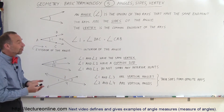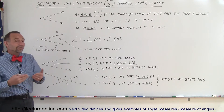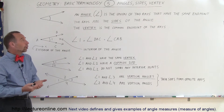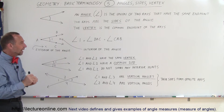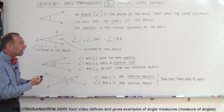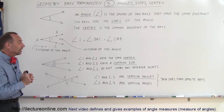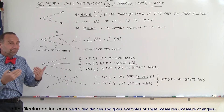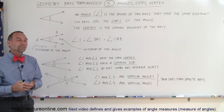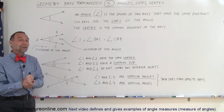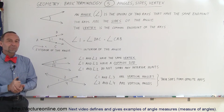So now we have a good definition for angle, a good definition for the sides of the angle, a good definition for the vertex, and we understand what common sides mean. We also understand what a vertical angle is and know that vertical angles are formed because the rays are opposite rays. That's a good look at what angles, sides, and vertex mean in geometry.